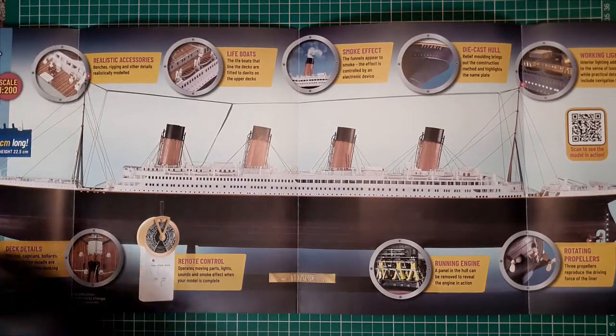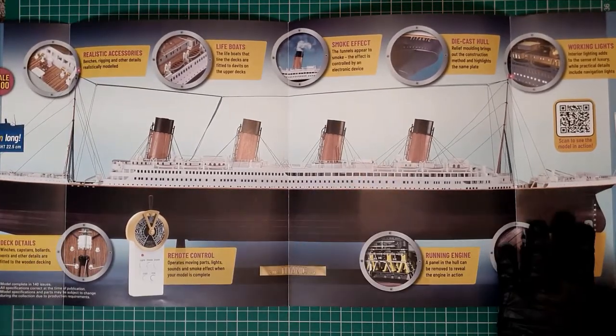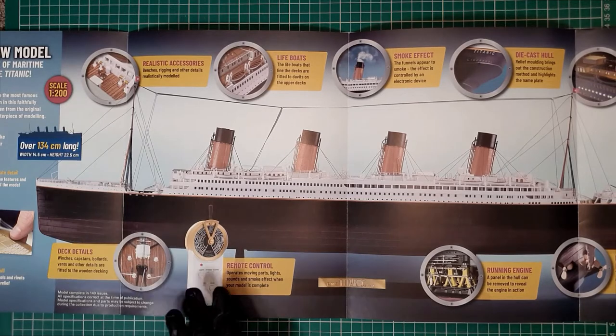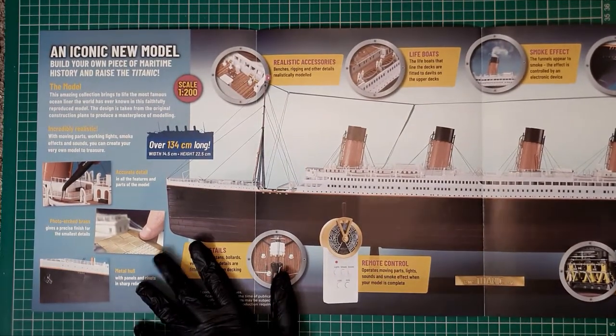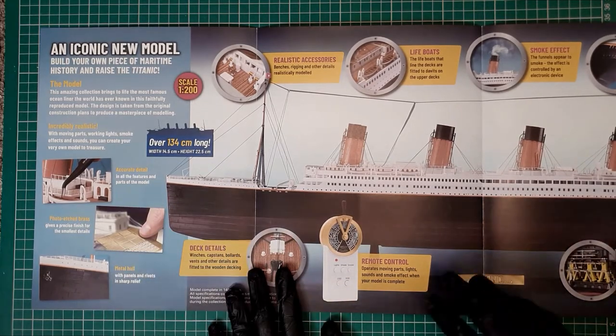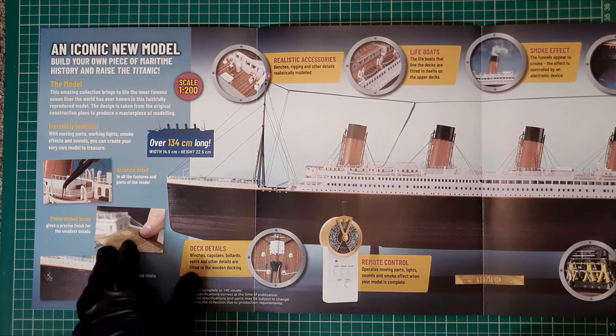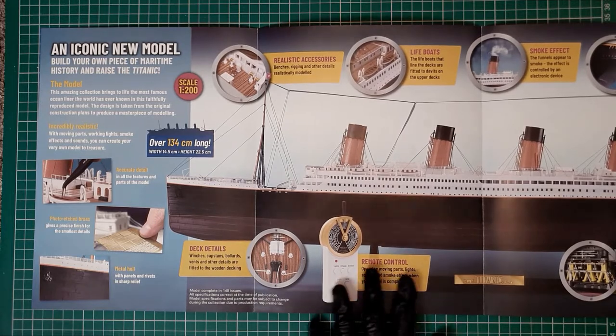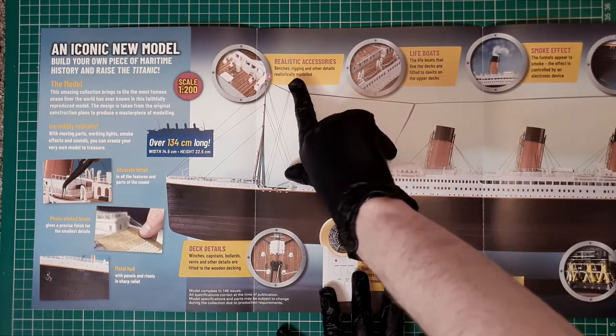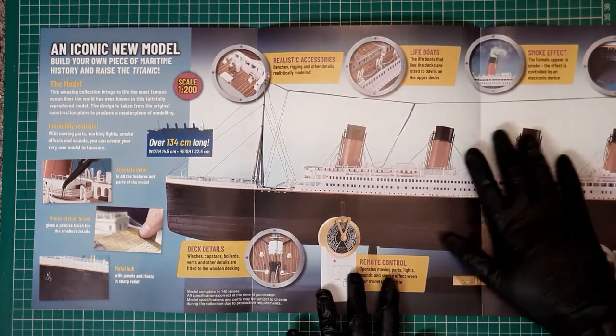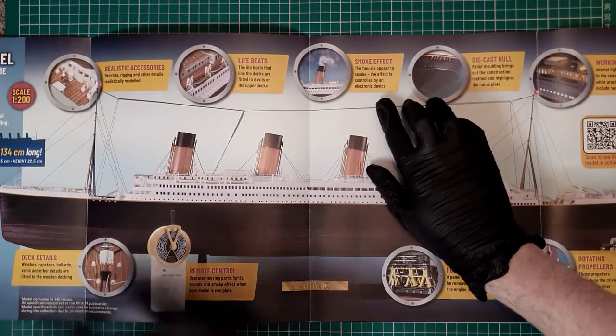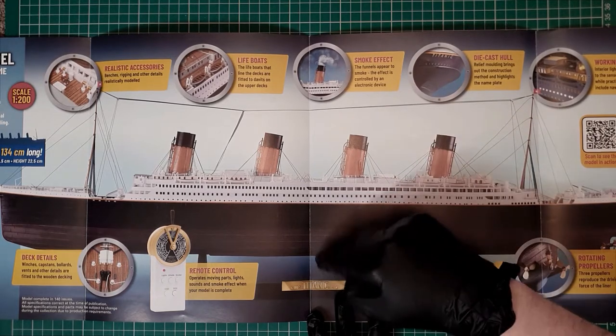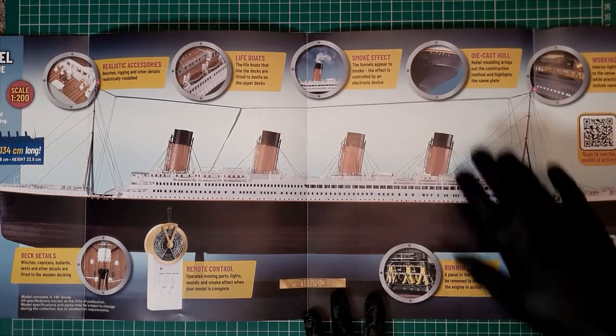It gives you a really nice idea what the model will look like once finished. 134 centimeters long. You've got accurate detail, photo-etched brass, a metal hull, deck details, remote control. Realistic accessories such as benches, rigging and other details. You've got the bridge section here, lifeboats, smoke effect controlled by an electronic device which I assume would be the remote control, and we also have the die-cast hull.